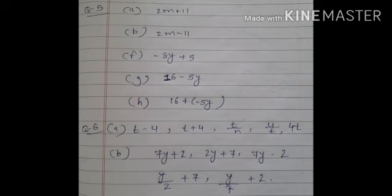Second: form expressions using Y, 2 and 7. Every expression must have Y in it. Use only two number operations. This should be different. अगेन यहाँ पे condition: Y, 2 and 7 का ही use करना है, sub में Y use होना चाहिए, and हम दो operations use कर पाएंगे. तो यह सब बन पाएंगे: 7Y plus 2, 2Y plus 7, 7Y minus 2 — इस तरह से. आप अपनी तरह भी बना सकते हो. यह सब questions आपको notebook में अच्छी तरह से लिखने हैं. Thank you.